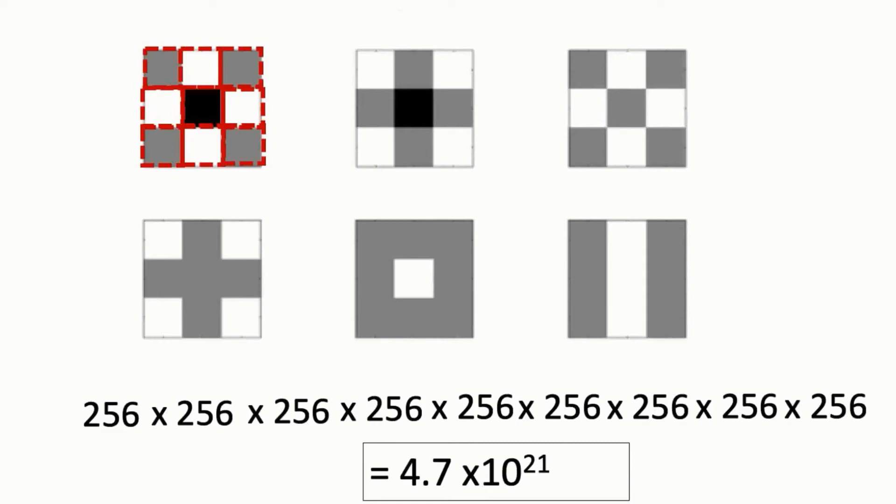And this comes out to a number equal to 4.7 times 10 to the 21st power. So this number with 21 zeros at the end is how many possible images we could have if we lived in a world where all we could see were 3x3 grayscale patches.